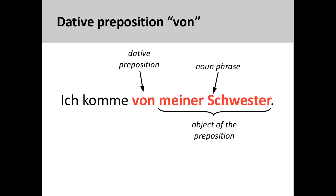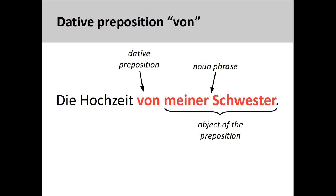The preposition 'von' can be used to describe arriving from a certain location or person, such as 'ich komme von meiner Schwester' — I'm coming from my sister, or more loosely, I've come from visiting my sister. 'Von' can also express a relationship of belonging between two nouns, as in 'die Hochzeit von meiner Schwester' — the wedding of my sister, or my sister's wedding. This construction with the dative preposition 'von' is often used as a substitute for the genitive case, which we will examine in a later presentation.